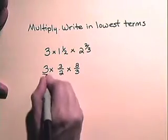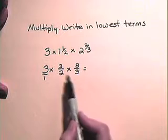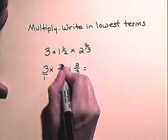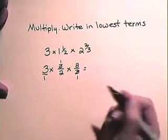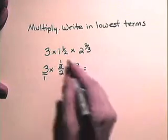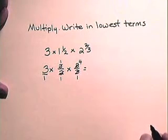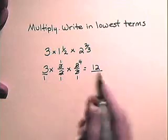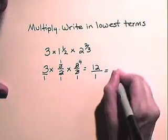3 has an understood denominator of 1. So we multiply numerators: 3 times 3 times 8 over 1 times 2 times 3. We first look for cancellation. We have a 3 in the numerator and a 3 in the denominator — 3 divides into 3 once. We have a 2 in the denominator and 8 in the numerator — 2 divides into 2 once, 2 divides into 8 four times. Now we multiply: 3 times 1 times 1 times 4 is 12, over 1 times 1 times 1 is 1. So 12/1 in simplest form is 12.